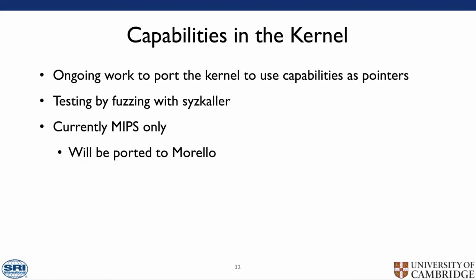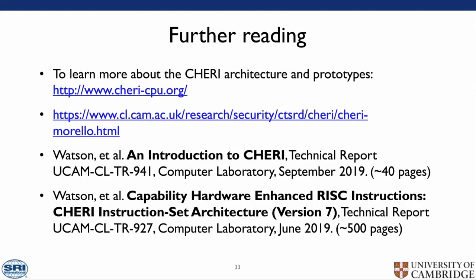Finally, we have an ongoing project to use CHERI ABI in the kernel, meaning all pointers within the kernel will be CHERI capabilities. We have been testing with fuzzing using syzkaller — unfortunately at the moment this is MIPS only, however we expect it to be ported to Morello. For further reading, we have a website with details on Morello, a 40-page introduction to CHERI, as well as a 500-page architecture manual.